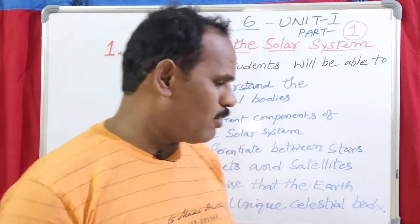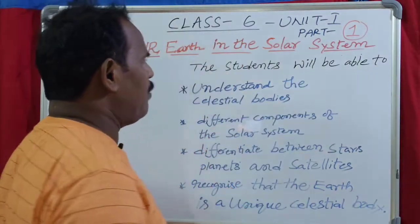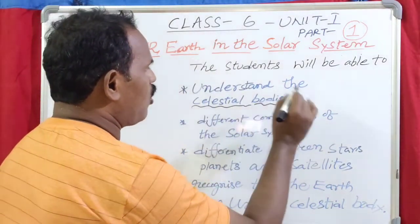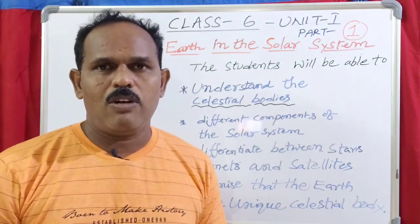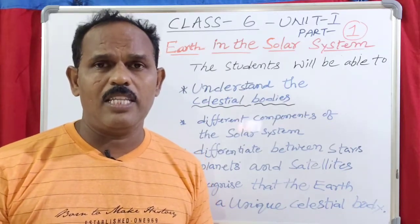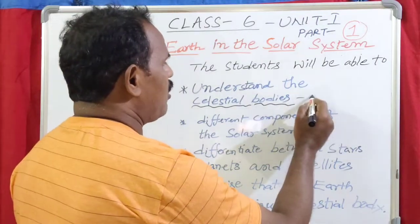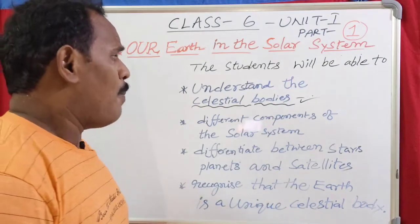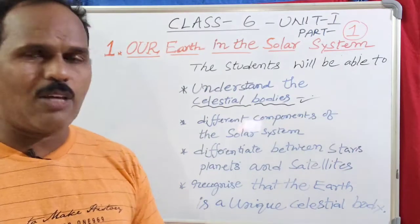Who can understand that? When we look at learning outcomes, students will be able to understand the celestial bodies. The second learning outcome is the different components of the solar system.